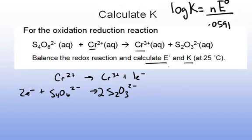I can look these up in the standard reduction table. The reduction potentials from the standard reduction potential table are negative 0.5 volts for the chromium 3+ to chromium 2+ reduction, and for this sulfur compound, it is plus 0.17 volts.